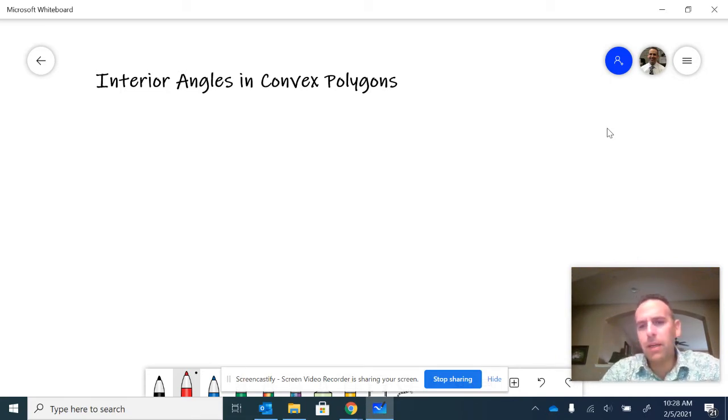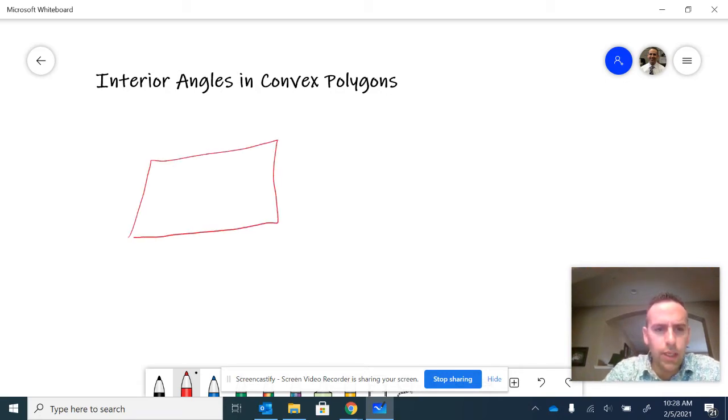So the basic idea is to make a polygon larger than a triangle and then to create triangles inside to think about the interior angles. Our first example, I'll draw a quadrilateral. It doesn't have to be a special quadrilateral, it just has to have four sides.